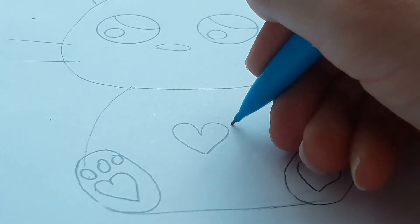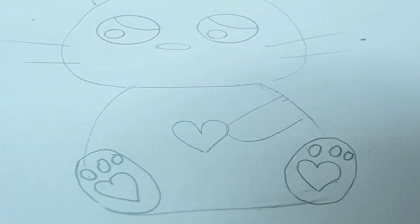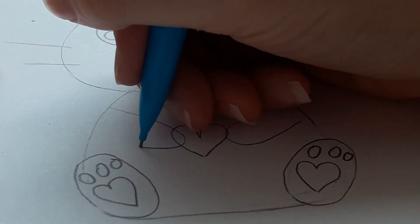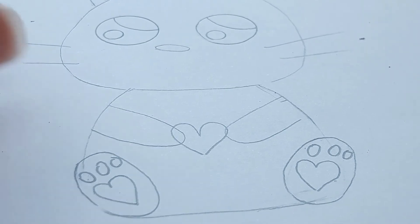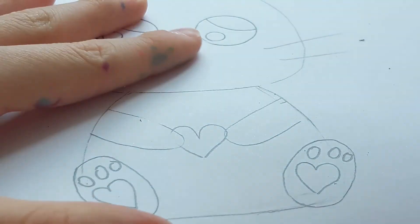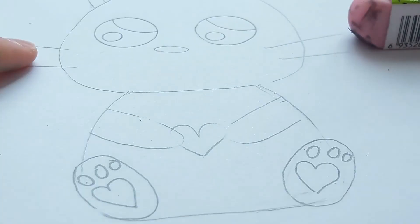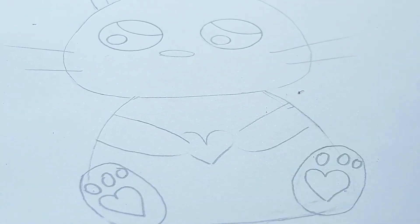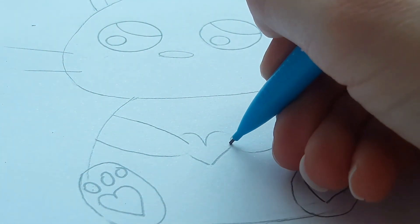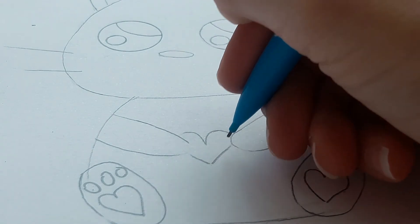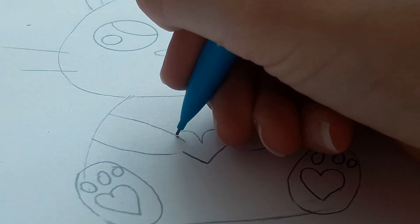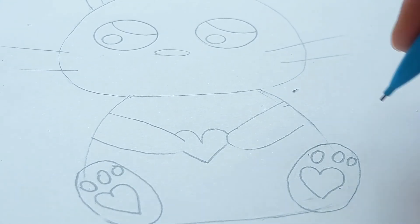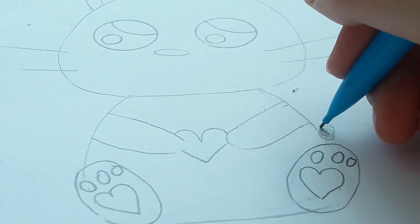And then draw the arms like that, and then erase the part, the side of our heart that is going to be covered by our arms. And then connect this like that. If we want, we can add a little tail right here like this.